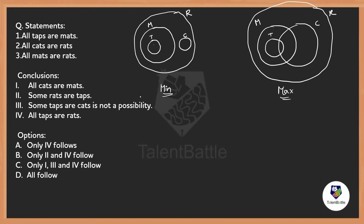Now checking Conclusion 1: all cats are mats. In the minimum condition, there is no relation between cat and mat — so how can I say all cats are mats? It is not satisfying the minimum, so we need not check the maximum. Even in the maximum, not all cats are mats. Even though the circle is over the mats, it is not satisfying the minimum condition, so Conclusion 1 does not follow.